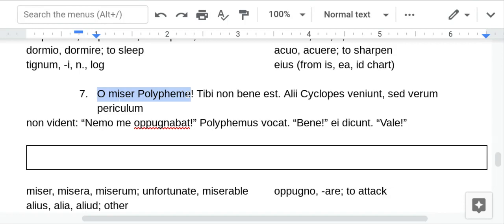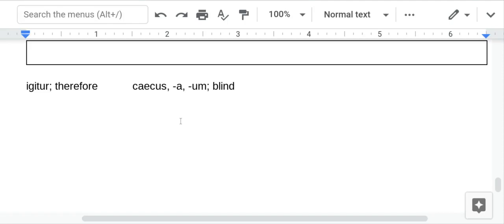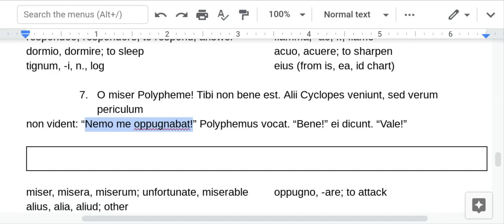Oh, unfortunate Polyphemus. Note the vocative here. Oh, unfortunate Polyphemus. This phrase is a little weird. Kind of, like, it is not well for you. Or you could say this isn't good for you. Other Cyclops come. But they do not see the true danger. The subject here is in the verb. Which happens all the time. NT equals they. But they do not see the true danger. No one attacked me. Aha. So, Ulysses says the name of the person who said his name was Nemo. No one attacked me, Polyphemus calls. Good. They say. And E-I just means they. It's the nominative plural from that chart. Good, they say. Goodbye.